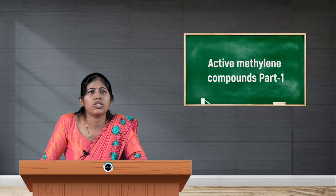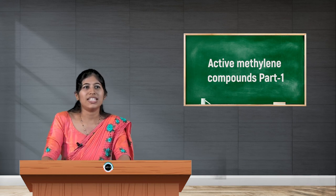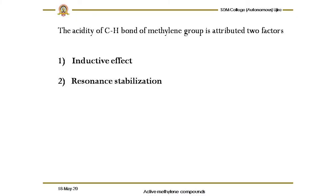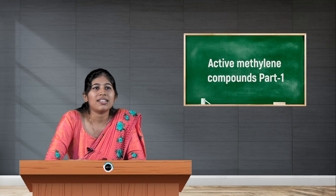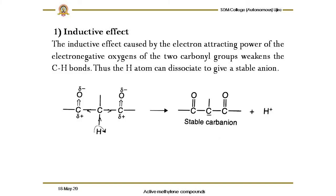The acidity of the CH bond of the methylene group is attributed to two factors: inductive effect and resonance stabilization. The inductive effect is caused by the electron-attracting power of the electronegative oxygen of the two carbonyl groups, which weakens the CH bond so the hydrogen can dissociate to give a stable anion. The two electron withdrawing groups easily withdraw electrons toward themselves, making removal of the proton easy and the resulting carbanion highly stable.